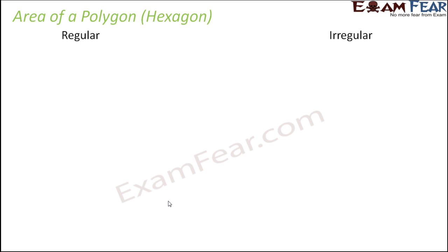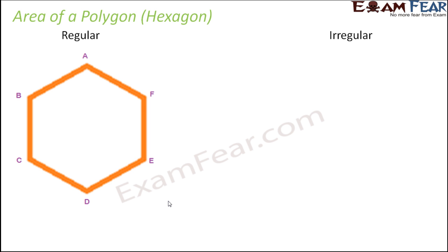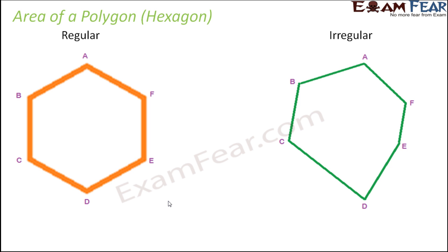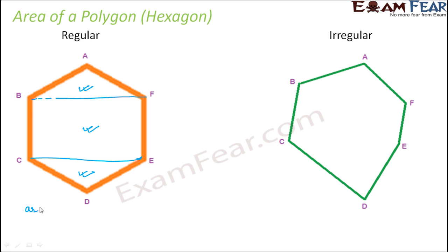Now let us look at a hexagon. A hexagon can be a regular hexagon — with all six sides equal — or an irregular hexagon where all six sides are of different lengths. In the case of a regular hexagon, your job becomes simpler. You just join BF and CE, and the moment you draw these two lines, you end up dividing it into two triangles and one rectangle. So the area of the hexagon would be: area of triangle ABF plus area of triangle DEC plus area of rectangle BFEC.